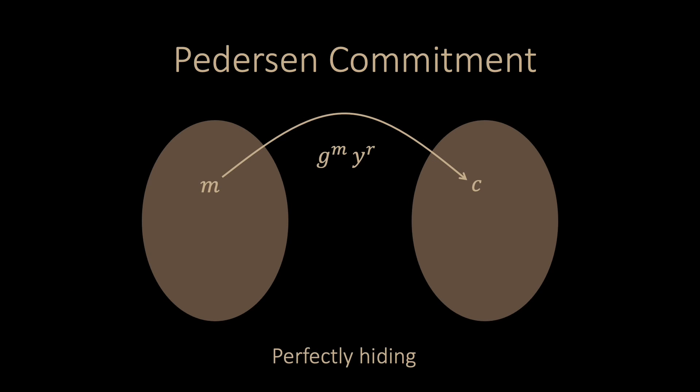Let us go to the hiding property. One can show that the protocol is perfectly hiding. The main reason for this is that for any m prime, there exists an r prime that evaluates to the same commitment. Note that this is not in contradiction to the binding property. Such an r prime is hard to find; here we are merely arguing about its existence.